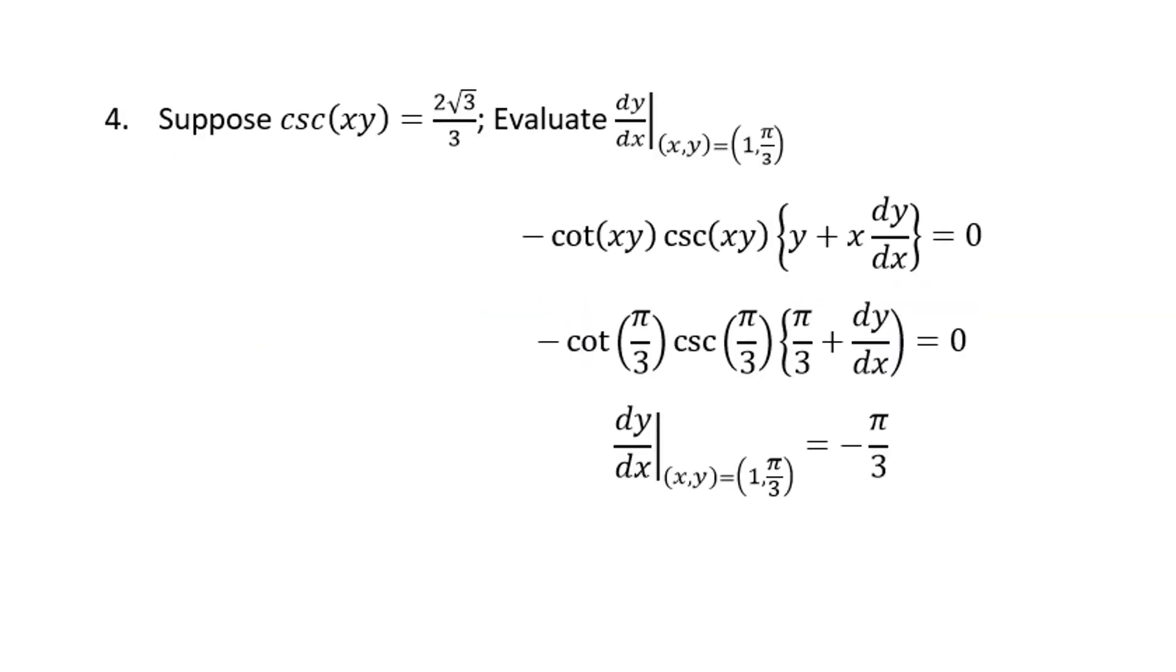This one is implicit differentiation. Again, the derivative has to be correct, and then we plug in numbers to get the number of minus pi over three.